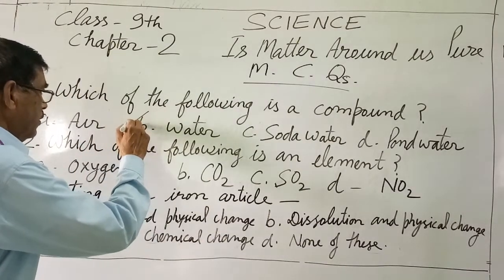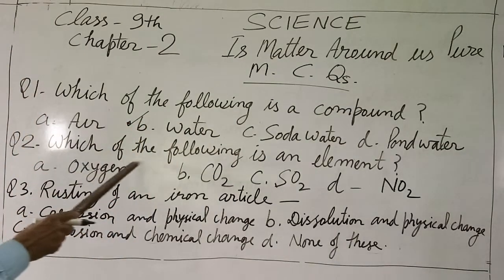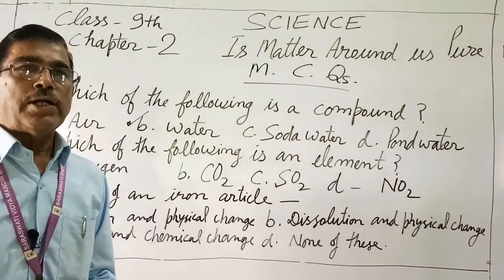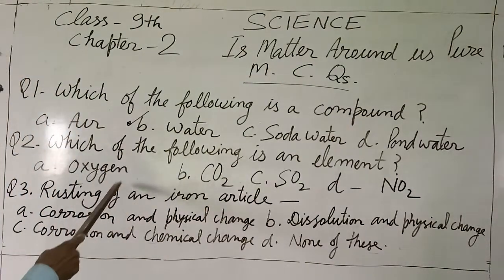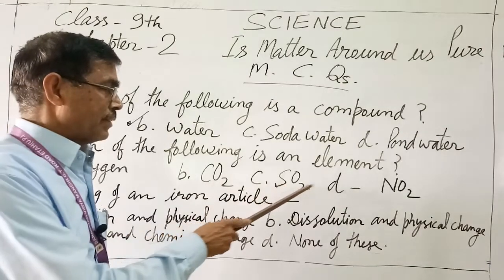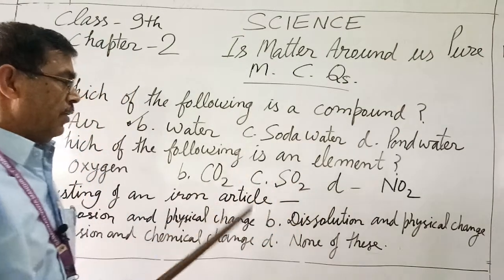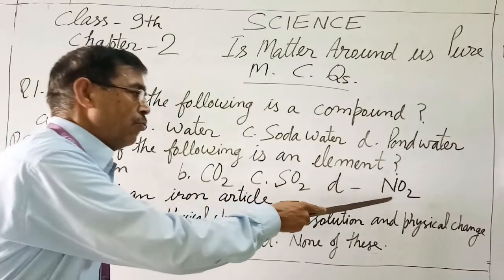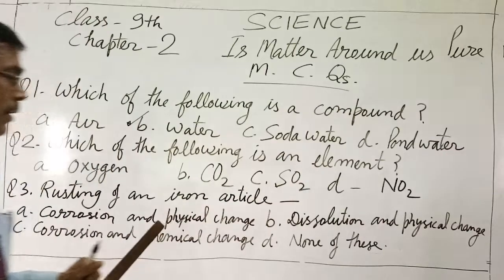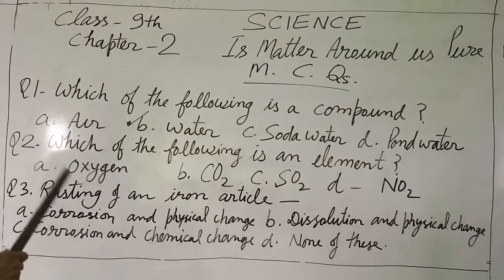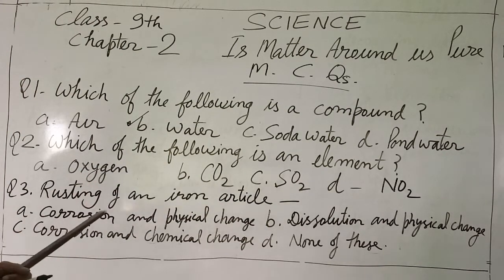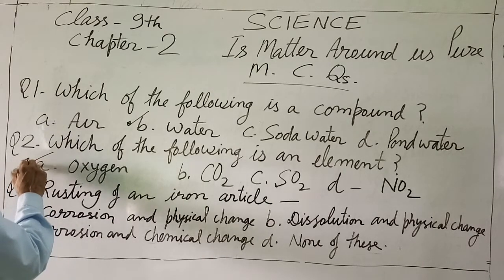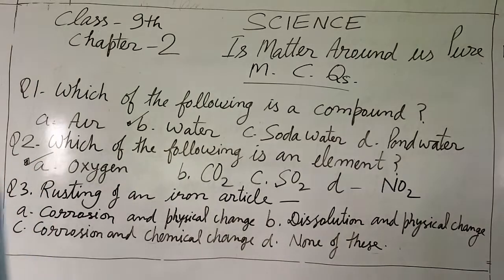Next question: which of the following is an element? Oxygen, carbon dioxide, sulfur dioxide, and carbon monoxide. We have two elements. Oxygen is an element. So here answer: A, oxygen.